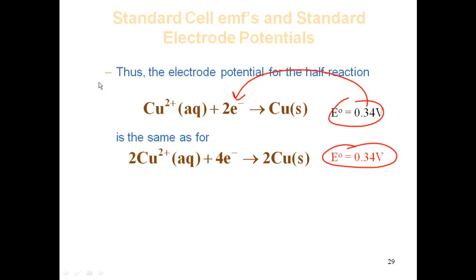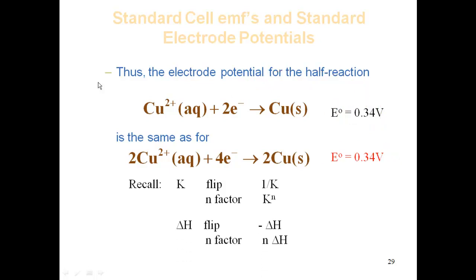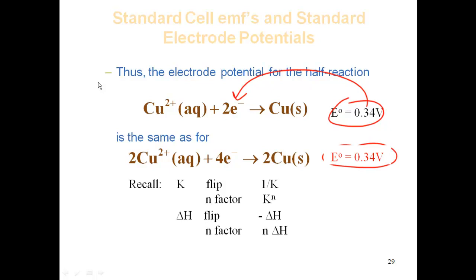It's important to keep straight how equation manipulations affect different thermodynamic quantities. For equilibrium constant K: flip the reaction → take 1/K; multiply by factor n → raise K to the nth power. For ΔH: flip the reaction → change the sign; multiply by factor n → multiply ΔH by n. For E (potential): flip the reaction → change the sign; multiply by a factor → E stays the same (it is intensive, not multiplied by the factor).